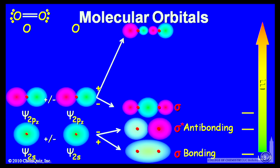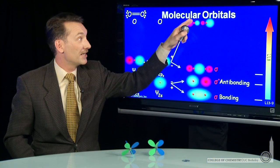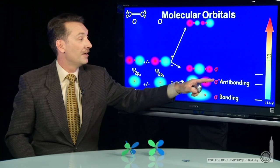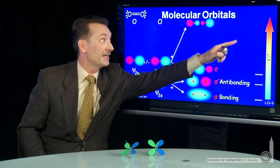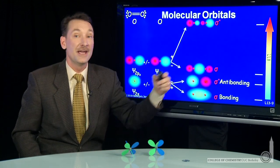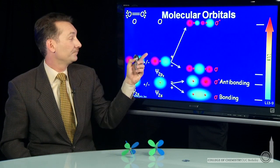Remember, the more nodes, the higher energy the orbital, this already having three nodes. Again, sigma bonding, sigma anti-bonding, energetically distributed.